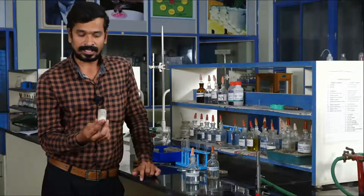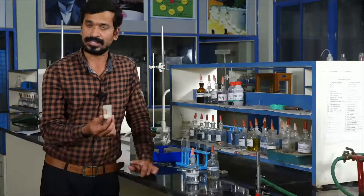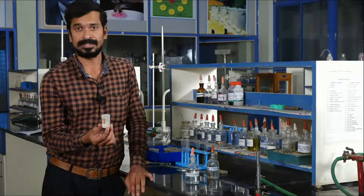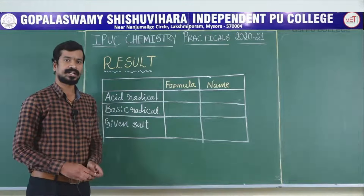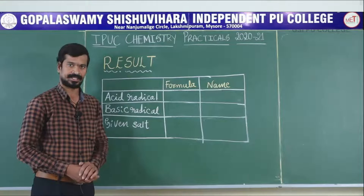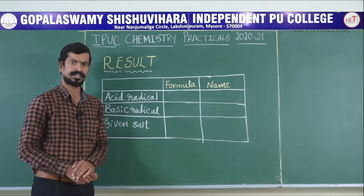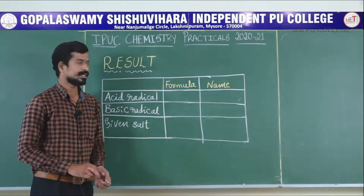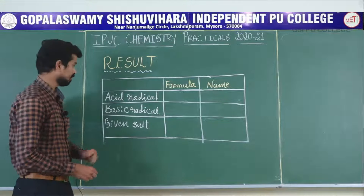The given salt contains which group basic radical? Sixth group — magnesium, Mg²⁺. In salt analysis, we identify the acid radical and the basic radical. The given salt contains the acid radical sulfate (SO₄²⁻) and the basic radical magnesium (Mg²⁺). The last step is writing the result report.